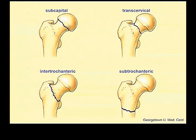Fractures of the pelvis can occur at the hip joint. There are also standard fracture types of the proximal femur, named logically: subcapital (at the base of the head), transcervical (midway through the neck), intertrochanteric (between the two trochanters), and subtrochanteric (below the lesser trochanter).